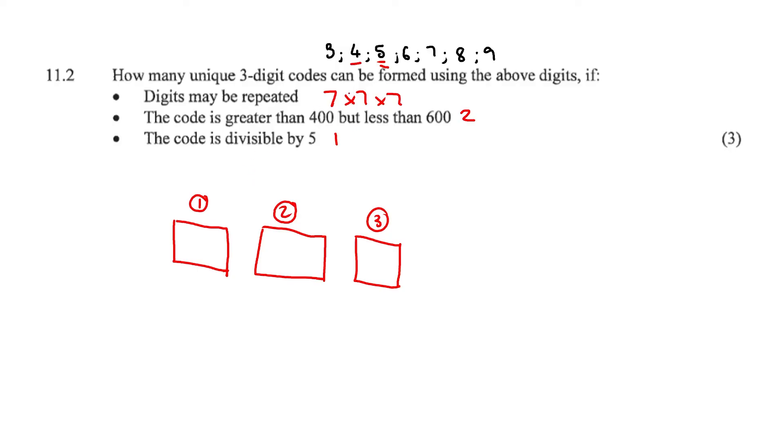In the first place, the digits may be repeated, so we don't really have much of a problem there. But we do. In our first position, it must be greater than 400 but less than 600. We can use 4 and we can use 5. So two possible options.